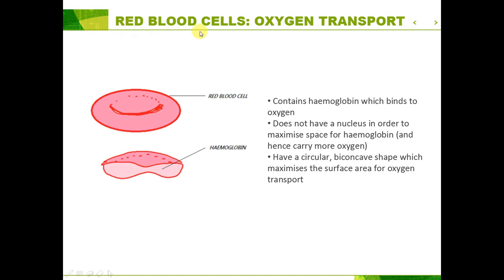Next up is red blood cells. Red blood cells specialize in the transport of oxygen. First, within the red blood cells you have something called hemoglobin, which is the protein that binds to oxygen. Another special feature is that red blood cells don't have a nucleus like most other cells — this allows more space for hemoglobin and therefore more oxygen to be carried. Lastly, their shape is a circular biconcave shape which maximizes the surface area for oxygen transport.